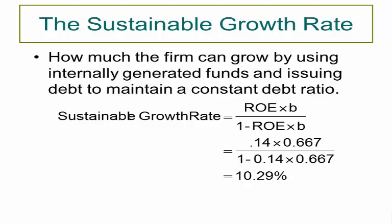Looking at the sustainable growth rate, the only real difference between it and the internal growth rate is that instead of using ROA, we're going to use ROE. Conceptually, the difference is that ROE contains financial leverage. So we're actually looking at how fast we can grow using external financing in addition to our own retained earnings. Maybe some debt is optimal—there is an interest tax shield to consider with debt, and leverage can allow us to take advantage of some opportunities. In this case, this company could grow 10.29%, about 3% faster than if it only used its own funds.